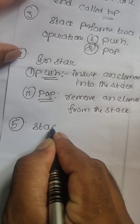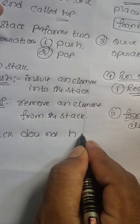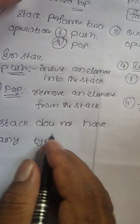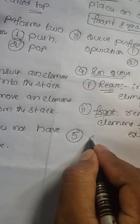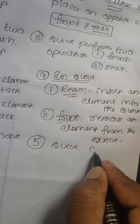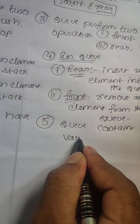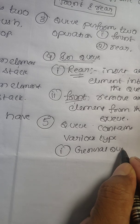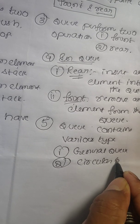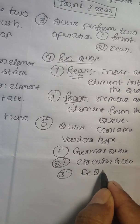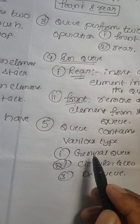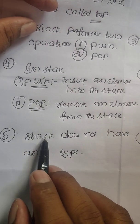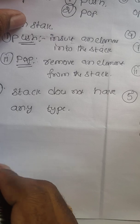The fifth difference: stack does not have any types — there is only one type. Whereas queue contains various types. The first one is general queue, the second one is circular queue, and the third one is double-ended queue, also called deque.